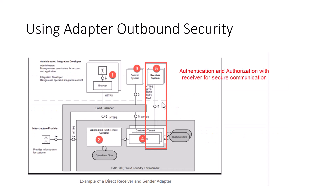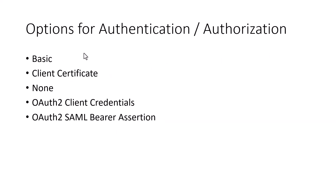The OData adapter, because we're using it as a sender adapter, has authentication and authorization features that you can add to it. The receiver system — the API from the API management system — controls the authentication and authorization because you're making a call to the receiver system. You can also set up HTTPS, get the certificate, and add it to the SAP Integration Suite certificate store. These are the authentication mechanisms supported when using a sender adapter.